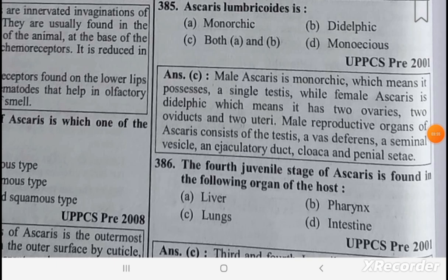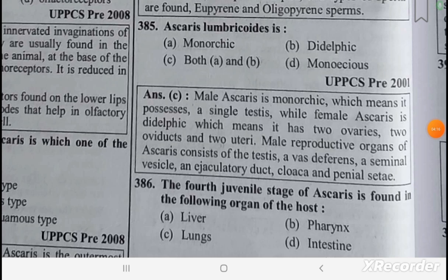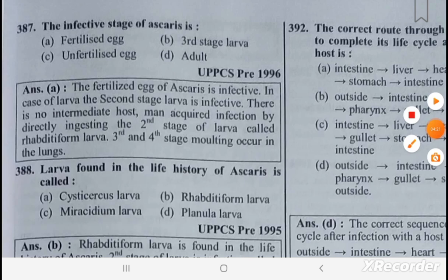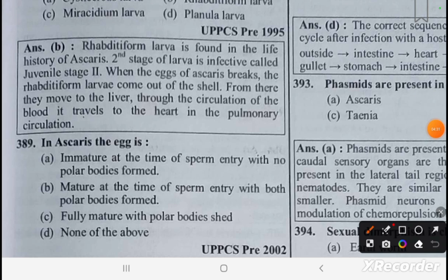Ascaris lumbricoides is monorchic and didelphic. The male reproductive organ of Ascaris consists of a testis. The fourth juvenile stage of Ascaris is found in the lungs. The infective stage of Ascaris is the fertilized egg. The larva found in the life cycle of Ascaris is called the rhabditiform larva.